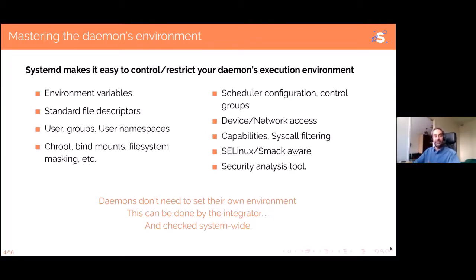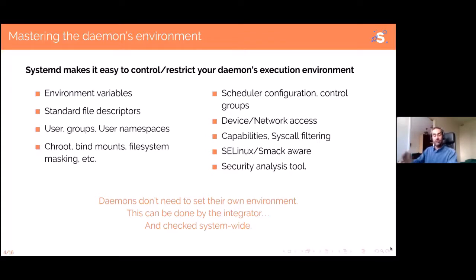For example, standard file descriptors: if you have a SysV init script, where does the stdout and stderr of your daemon go? Nobody knows. If you're lucky, it goes to /dev/null; most of the time it goes to the console. With systemd, you have one parameter to set up the most standard cases for standard file descriptors — sending it to syslog, to the journal (which is the default), or to /dev/null. For input, you can provide a character string or binary data to feed to your program. There are also more advanced things most people don't know how to set up, but systemd can set them up for you easily.